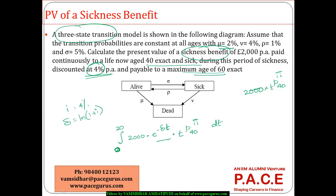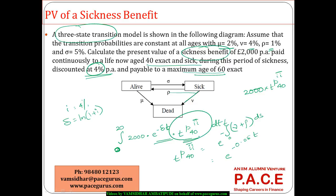We also need e to the power of minus delta T. The probability of staying in state i (the sick state) is e to the power of minus the integral from 0 to T of all transitions out of that state. From sickness to dead the rate is nu (4 percent), and from sickness to alive the rate is rho (1 percent). So combining those, it is e to the power of minus 0.05T.